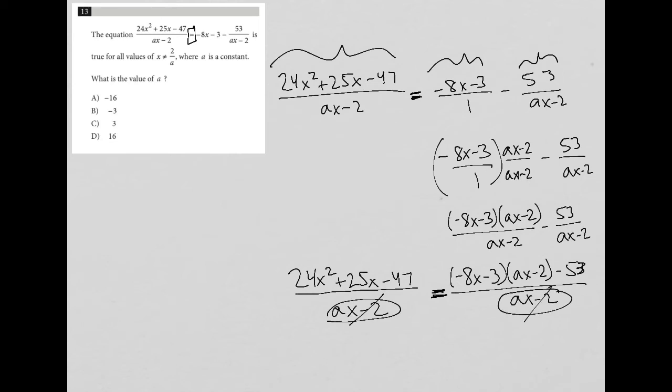What I really need to do is figure out how do I make the numerators equal to each other? So I'm going to go over here to this side of the board and say, how do I get 24x squared plus 25x minus 47 to equal negative 8x minus 3 times ax minus 2?